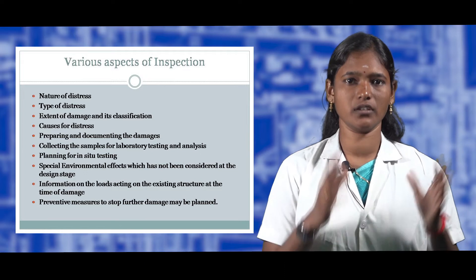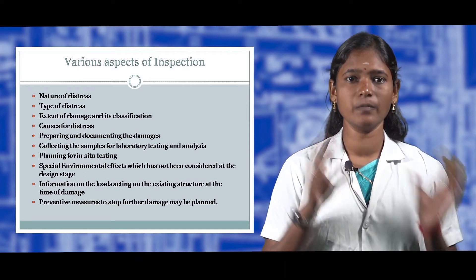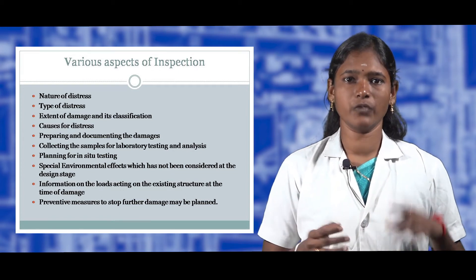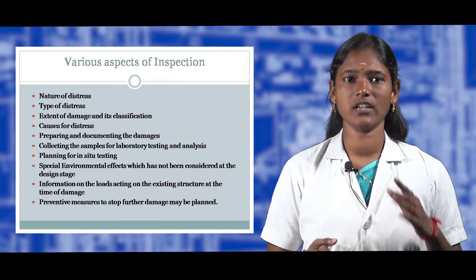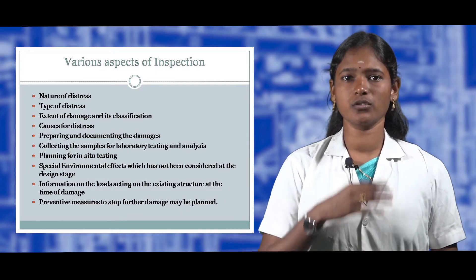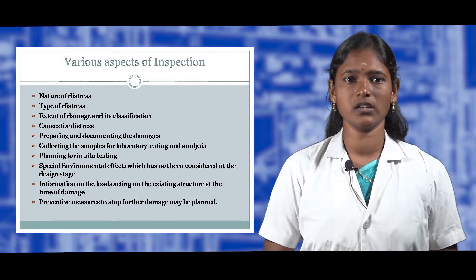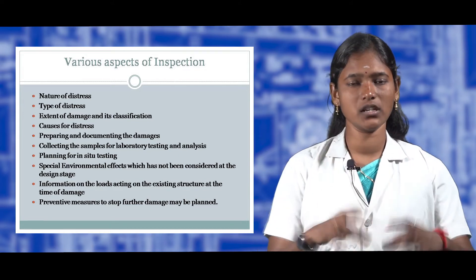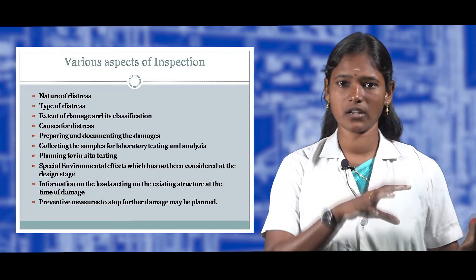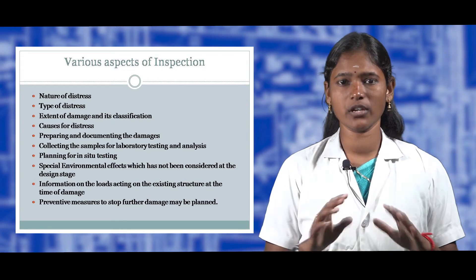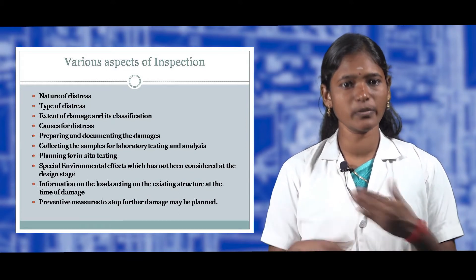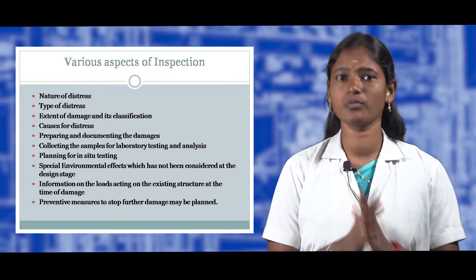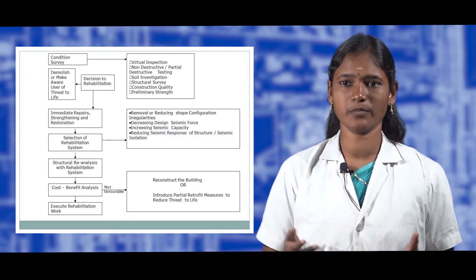Inspection involves examining the structure to be repaired or the distressed or damaged structure. The various stages of inspection include observing the nature, type, and extent of the damage, classifying it, identifying the major causes, preparing documentation, collecting samples for laboratory analysis, planning in-situ testing, considering special environmental effects, collecting load information, and planning preventive measures to stop further distress.